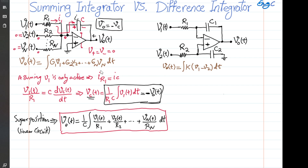Now, of course, you could do this using S-domain analysis rather than time-domain analysis. I'm going to do that S-domain analysis for the second circuit, so it would be as if we are using both methods to compare. For the second circuit, you can see the impedance of the capacitor — the Z of C2 — in S-domain analysis is 1 over C2·S.